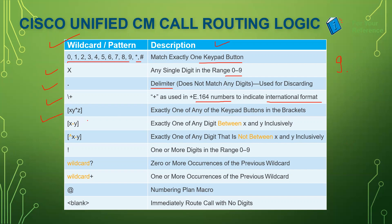Then we have [XYZ] — for example [2, 4, 5] — it matches exactly one of any of the keypad buttons in the bracket. So using that bracket, you can take four, two, or five — only those specific numbers. Then we have [X-Y] — for example [1-7] — that means any number between one and seven will be selected. If you press eight, this route pattern will not match. X and Y are inclusive.